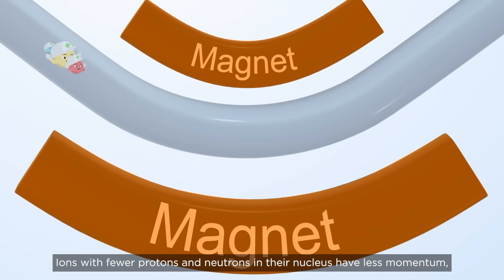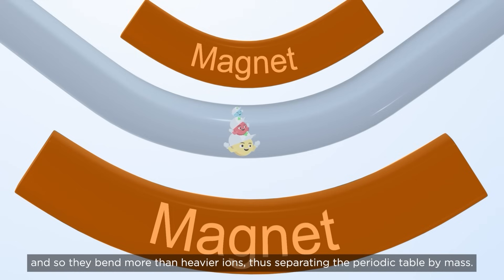Ions with fewer protons and neutrons in their nucleus have less momentum, and so they bend more than heavier ions, thus separating the periodic table by mass.